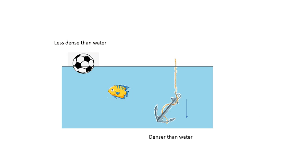If an object is less dense than water, it will float. If an object is more dense than water, it will sink. The fish in the middle has the same density as water — it can actually control its density using a swim bladder, allowing it to move up or down. So: less dense than water → floats; more dense than water → sinks.